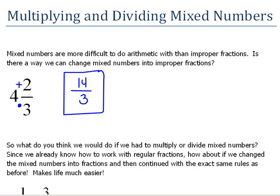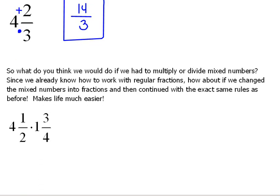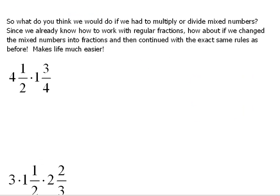Well, if we can change mixed numbers into improper fractions, wouldn't it make sense that we could multiply them and divide them using the same exact rules that we have learned already? Absolutely. So, let's try a couple of examples here. Here we have 4½ times 1¾. So, again, let's change these over to improper fractions first. We're going to multiply and then add. 2 times 4 would be 8, plus 1 is 9. Over, we keep the denominator of 2.